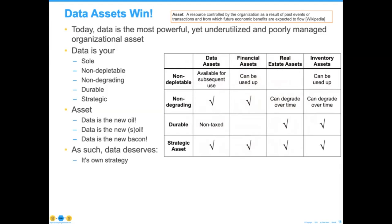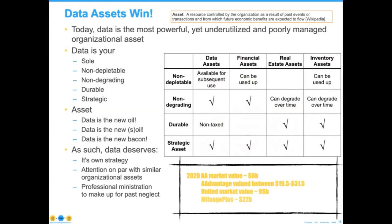As a unique organizational asset, data deserves its own strategy. It deserves attention on par with similar organizational assets, and it requires professional administration to make up for past neglects. Forbes ran an article last fall showing that American Airlines had a market value of $6 billion by stock, but a group of investors said their frequent flyer data was valued between $20 and $30 billion. United also had a similar case. These two statements cannot both be true, and there's quite a lot of work we have to do around that.